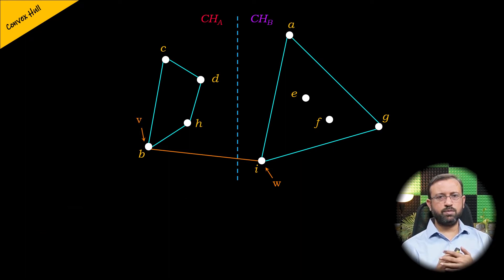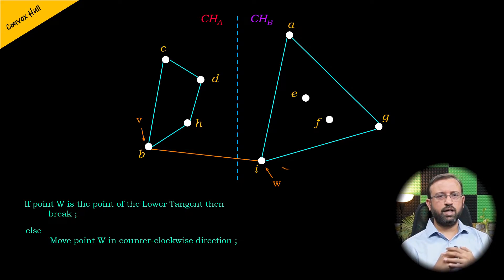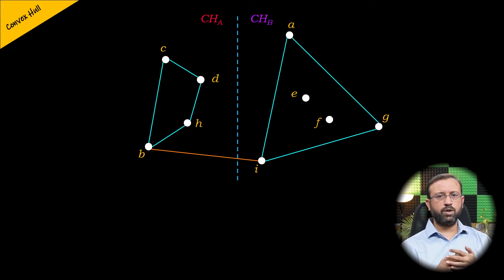We now perform the same steps for the points in the right convex hull but in the counterclockwise direction to find the lower tangent. We check if the point W of the line segment VW is the point of the lower tangent for the right convex hull. If so, we stop; otherwise, we move point W in the counterclockwise direction. In this case, the point W of the line segment VW is already the point of the lower tangent for the right convex hull because it's the lowest point in the right convex hull. So we stop, and this is how we compute the lower tangent for merging the left and the right convex hull.